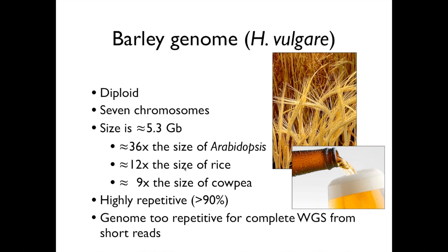What we'll go through today is a summary of our work focused on the barley genome. Barley is quite a simple genetic system to work with in some ways — it's a diploid with seven chromosomes, and it's primarily inbreeding, so we can work with individuals that generally have a single haplotype, which simplifies assemblies enormously.